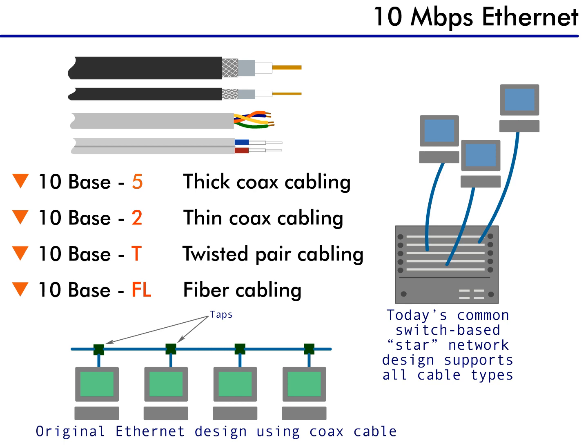Later still, 10BaseT was standardized. In this case, the T stands for twisted pair cabling. This type of cabling is limited to a maximum distance of 100 meters. Finally, fiber cabling was added with the 10Base FL standard, which allowed distances to reach into the kilometers.